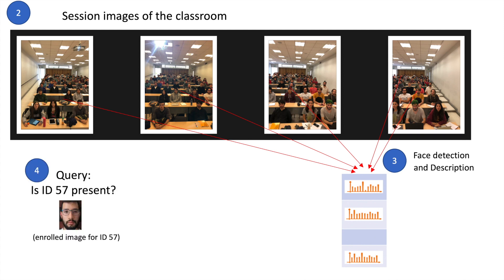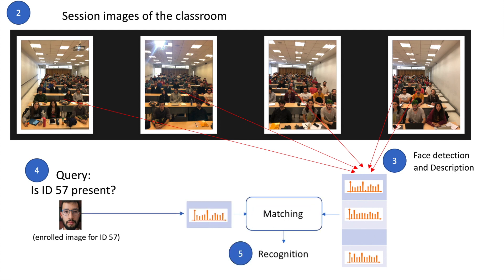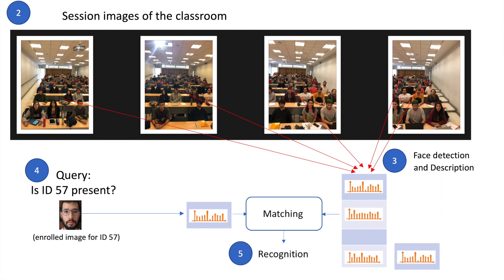If we want to know if, for example, student 57 is present, we take the image from the enrollment database, extract the descriptor, and compare it with the descriptors from the session. We compare the descriptor of the enrollment with all descriptors of the session. If we find two descriptors that are similar enough, we can say that person 57 is present.